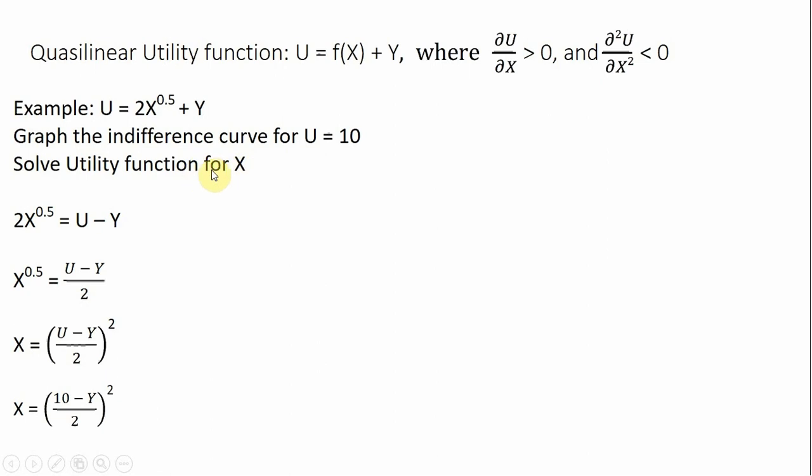So the way I do this, I'm going to solve this utility function for x. Moving y over here, subtracting y from both sides, dividing both sides through by 2, getting rid of this square root here on x by squaring both sides, and then the last step here, all I do is plug in 10 for u. So we solved this utility function for x and then plugged in 10 for u.